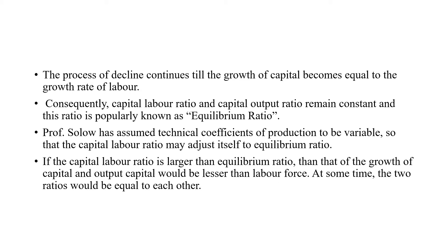This process of continuing decline of capital will continue until the growth of capital becomes equal to the growth rate of labor. That is the point at which the decline of capital stops. So long as the growth of capital is greater than the growth of labor, there will be a continuous decline. This decline stops as soon as capital growth equals labor growth. Consequently, the capital-labor ratio and the capital-output ratio will become constant, and this ratio is known as the equilibrium ratio in the Solow model.